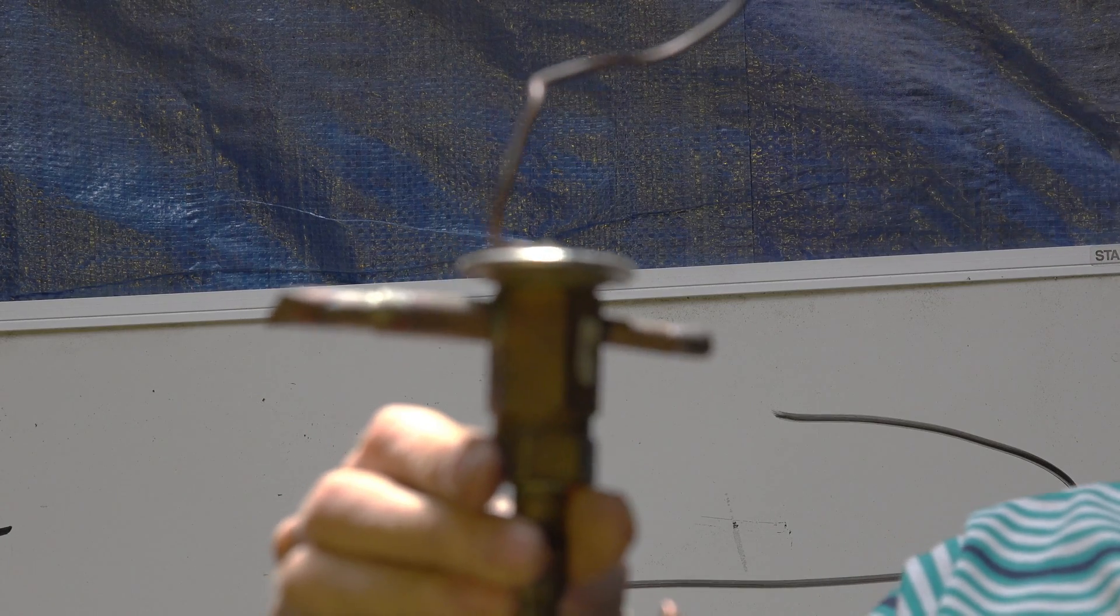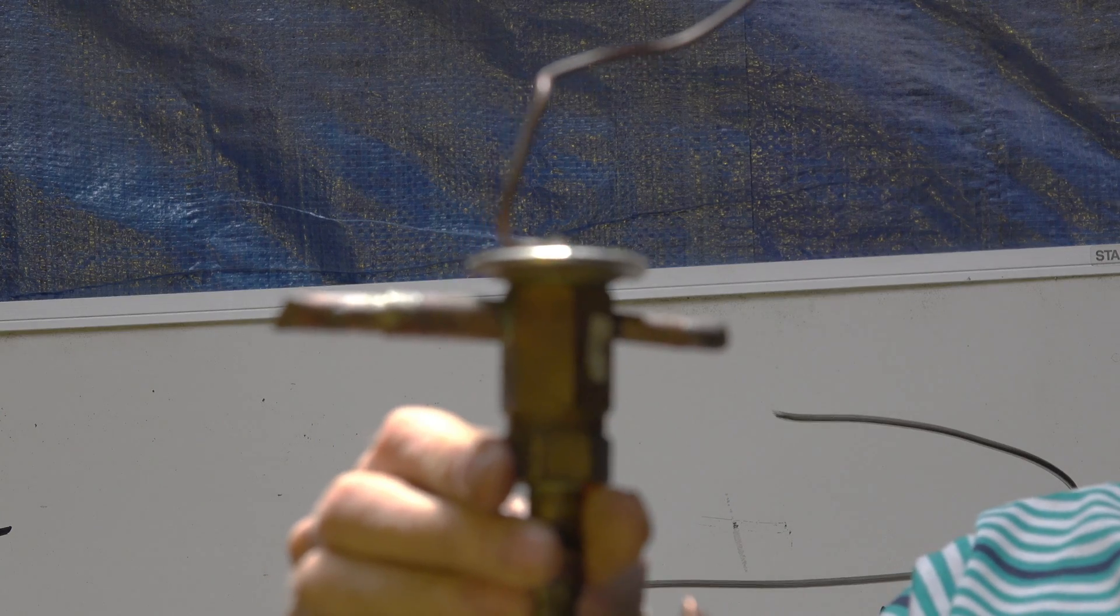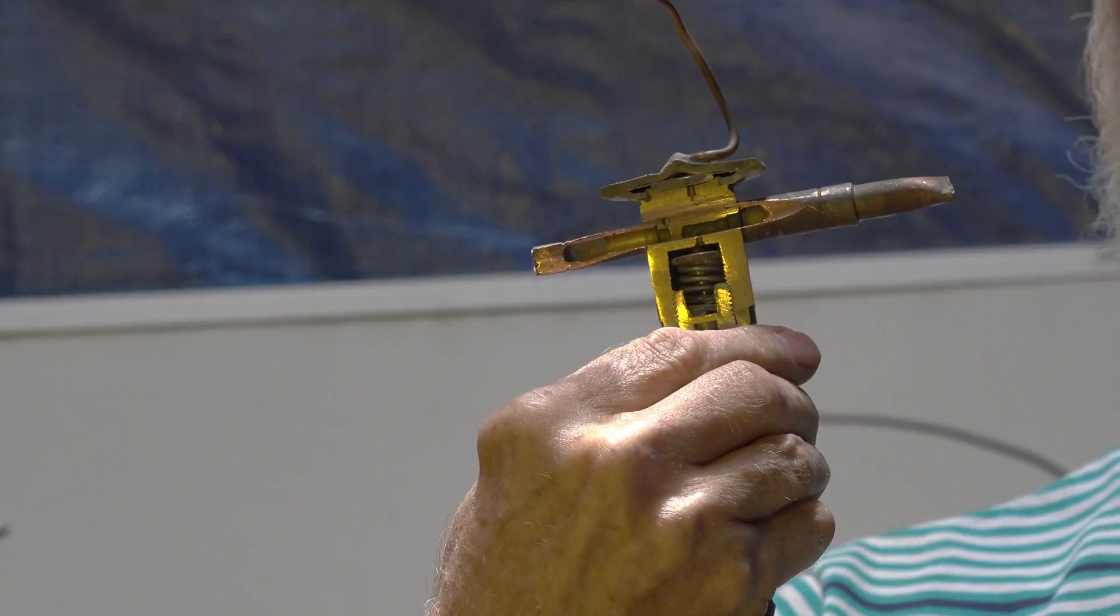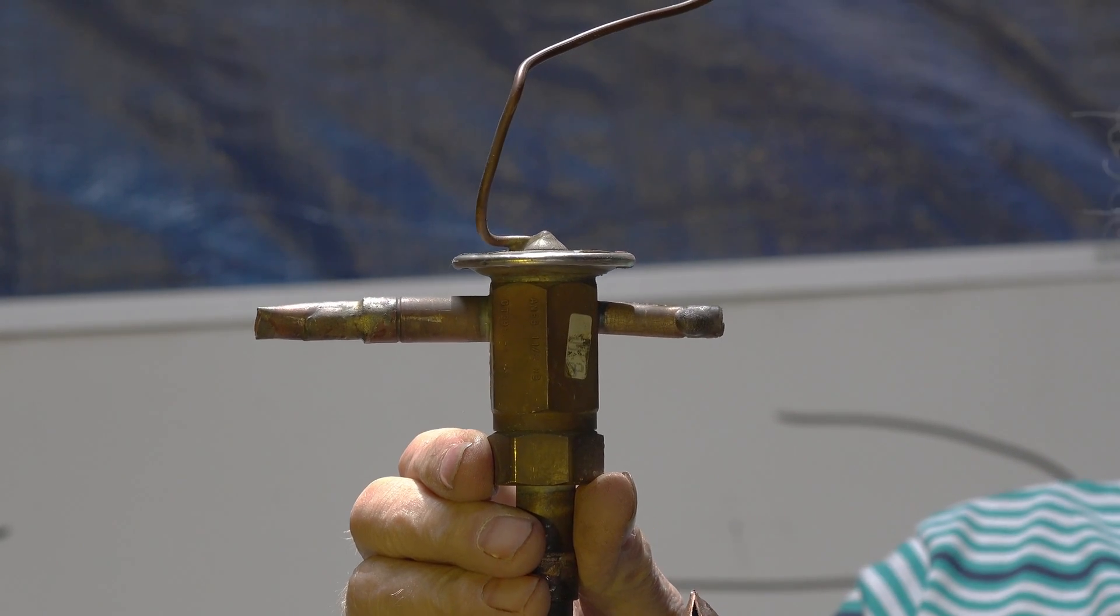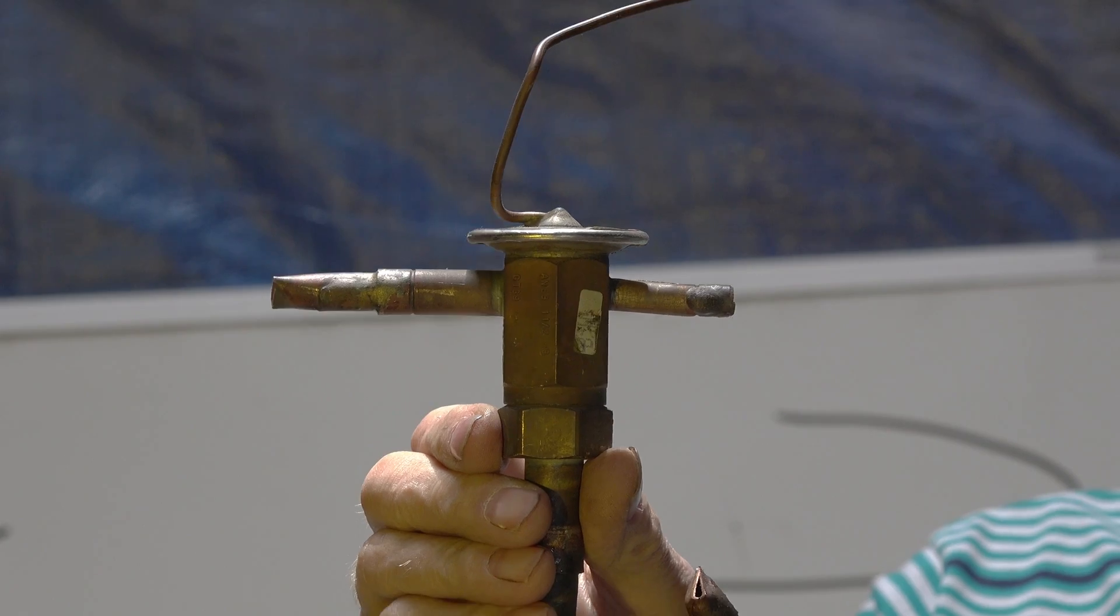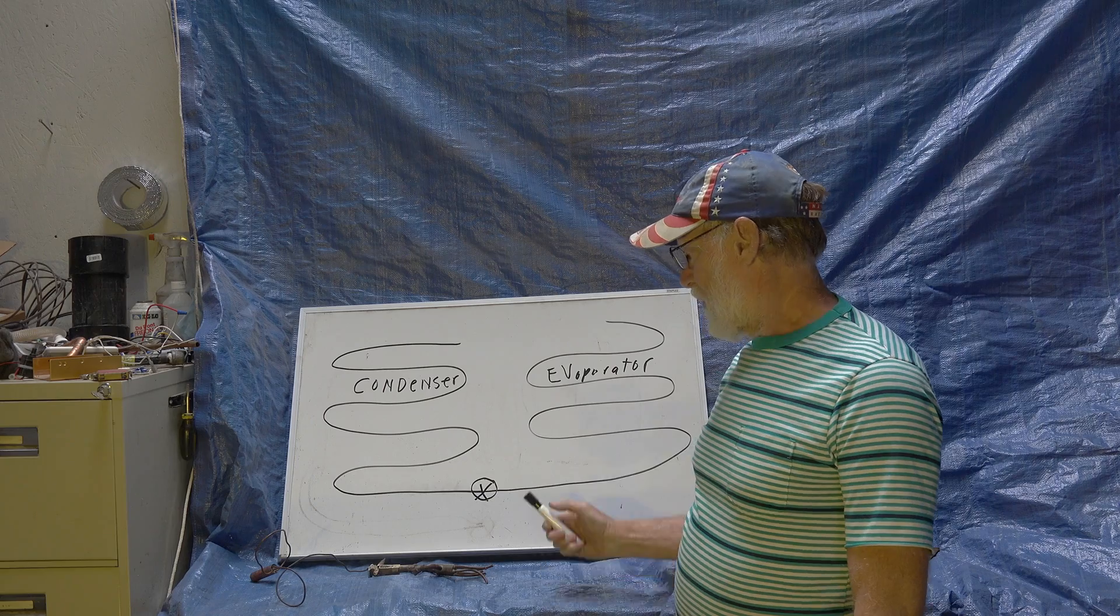This one here is a thermostatic expansion valve - got all sorts of controls on it. This one here's been cut apart and we'll get into that later on how it works, but it's still a restrictive device.